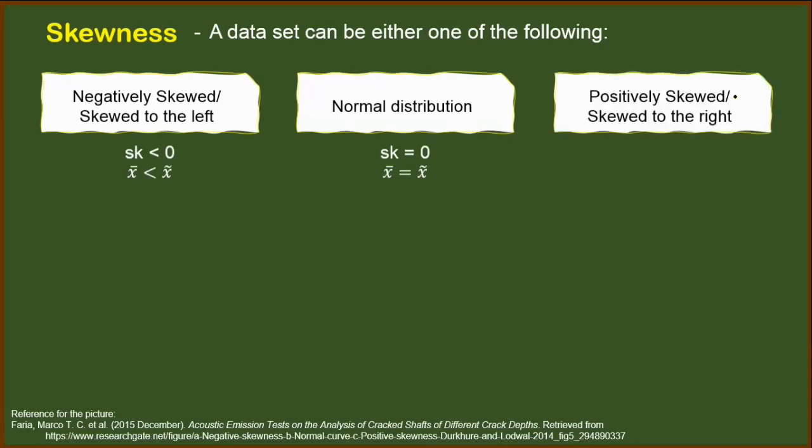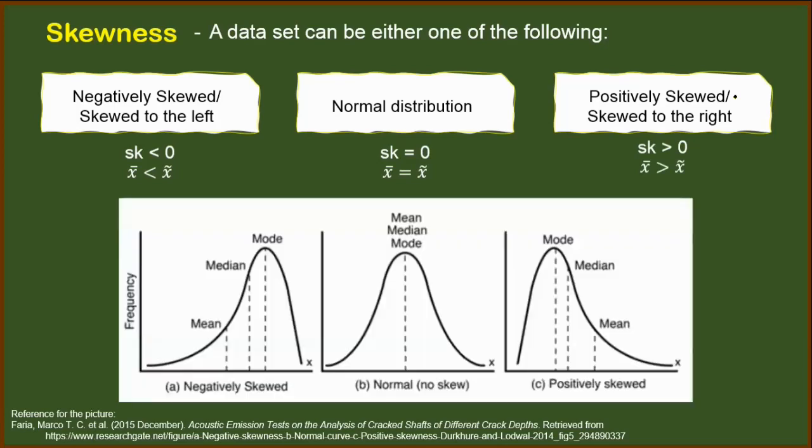However, we also have positively skewed distribution or a distribution that is skewed to the right. In this case, we have a skewness of greater than zero and the mean is greater than the median. To illustrate further, we have these three pictures of the different distributions based on skewness.